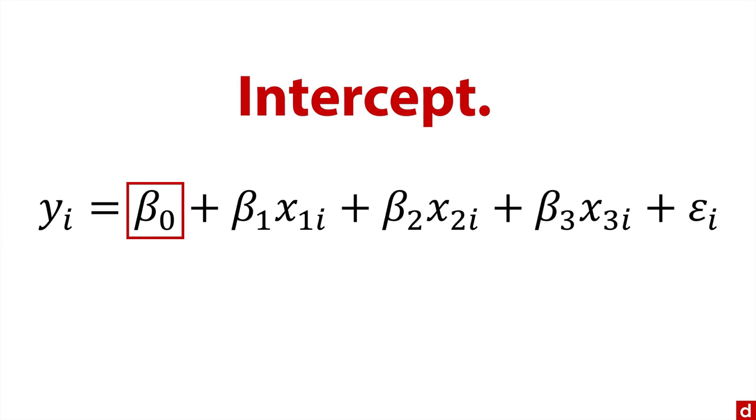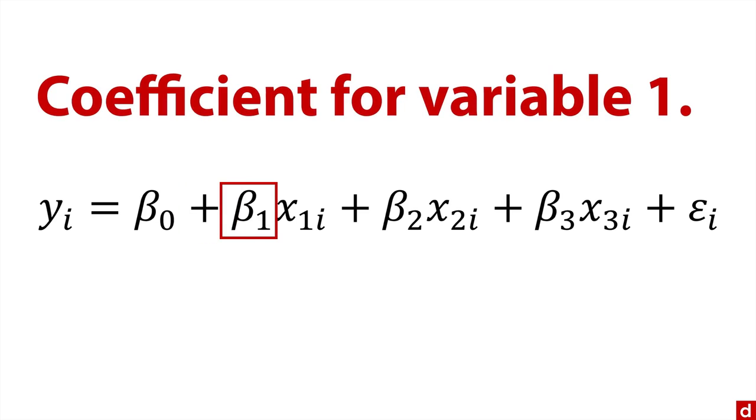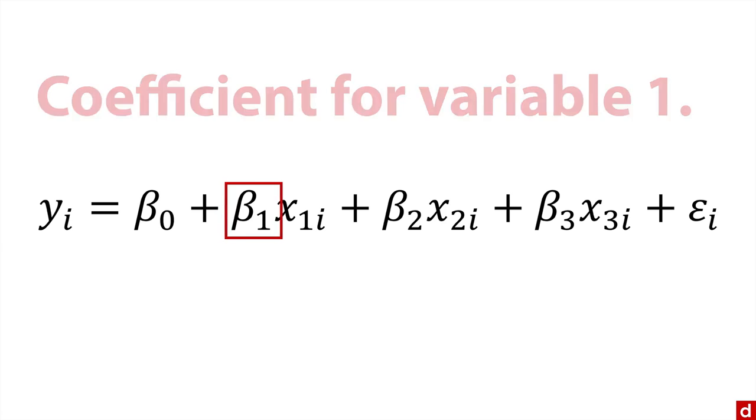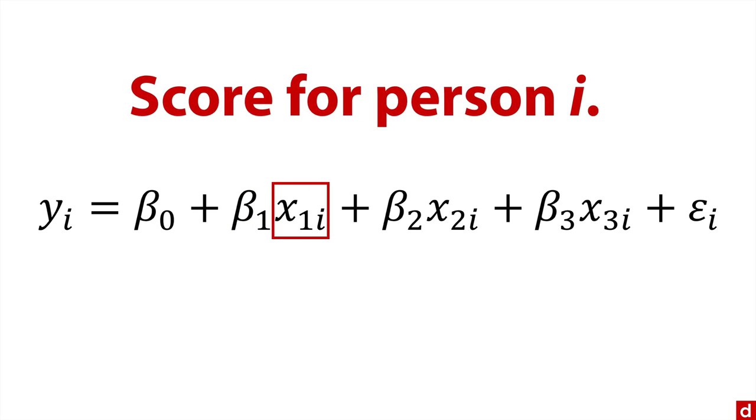But right next to it, we have the coefficient for variable one. So beta, which means a coefficient, sub one for the first variable. And then we have variable one, x one, which means variable one. And then the i means it's the score on that variable for person i, whoever we're talking about. Then we do the same thing for variables two and three.